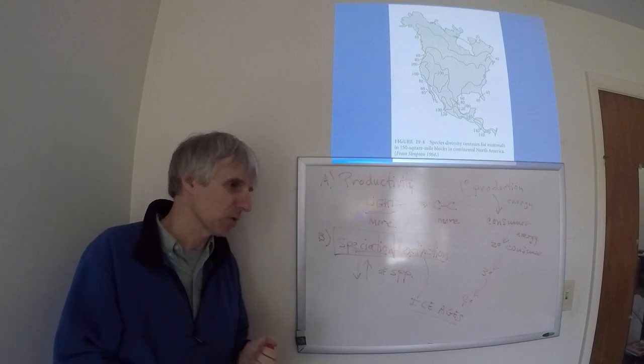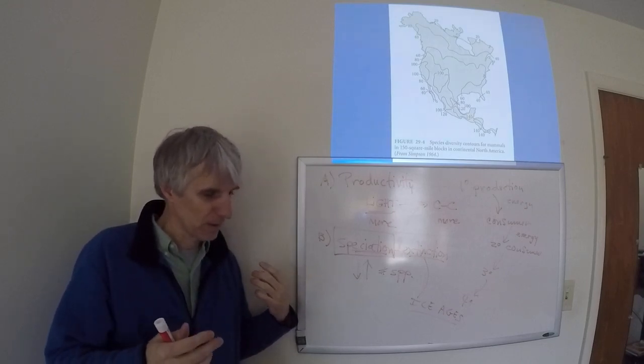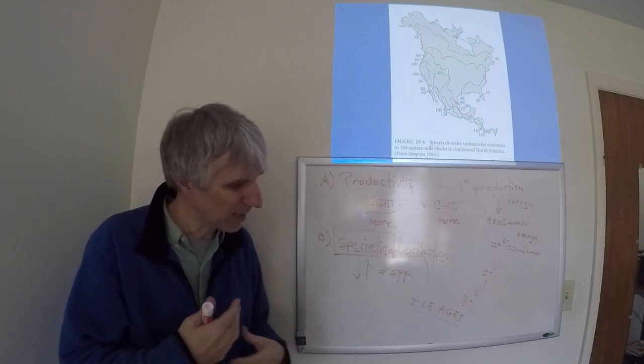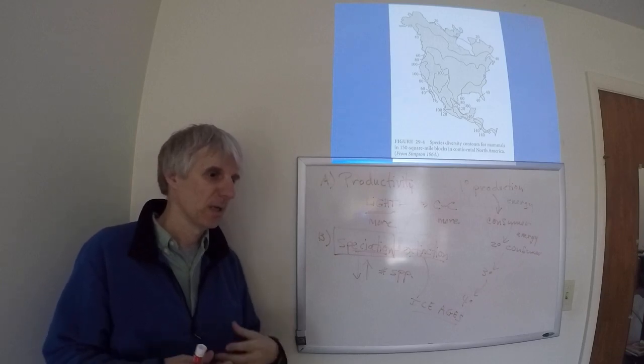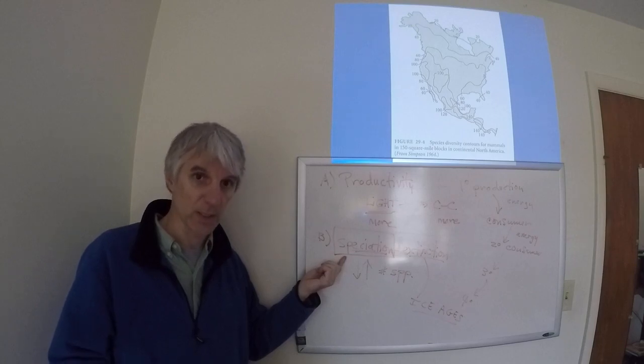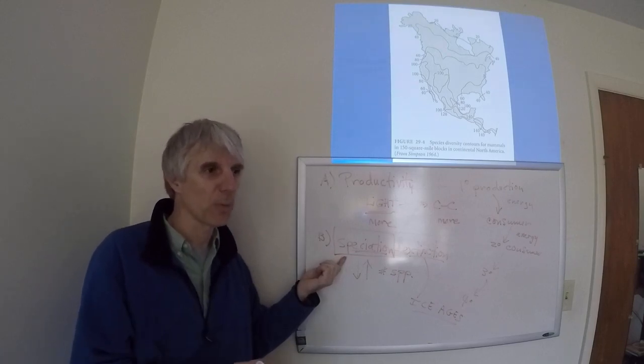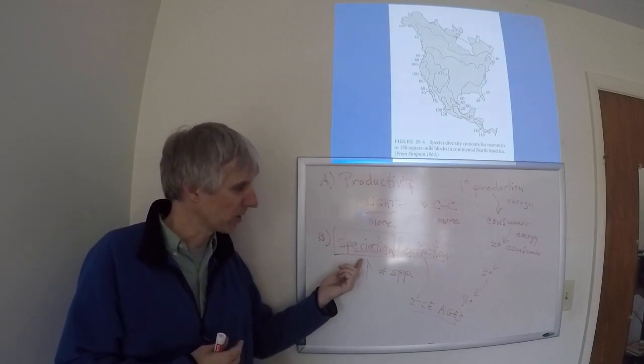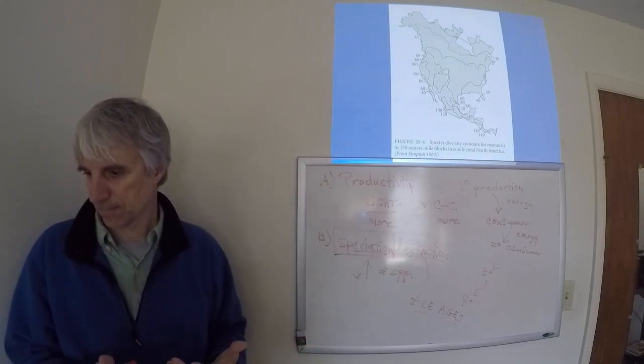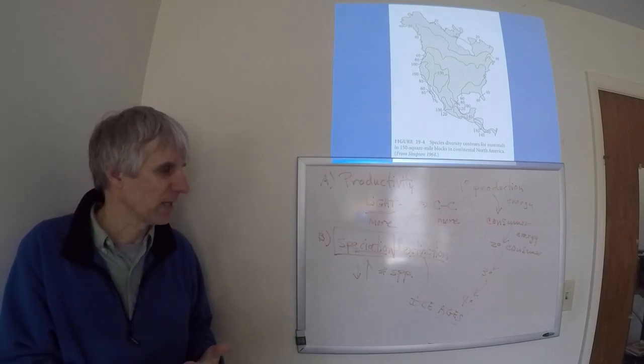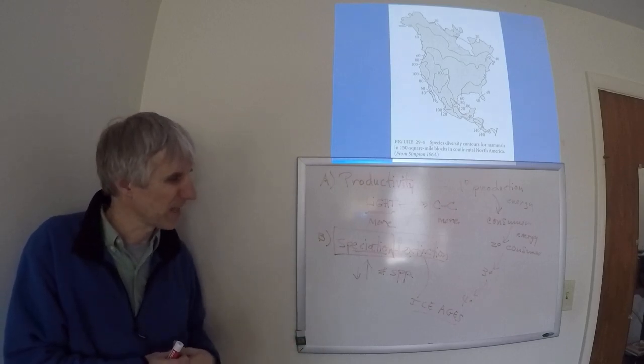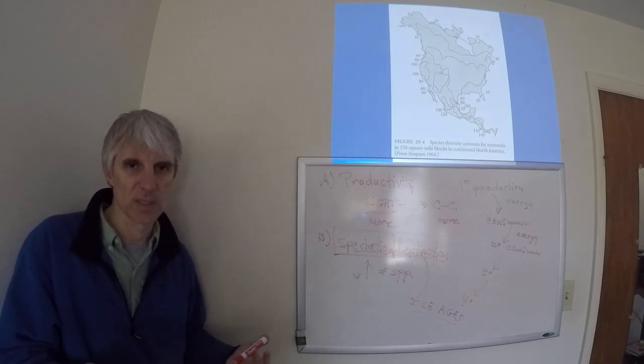That would also mean that because the tropics haven't had these periods like this of high extinctions, they've had a long time to accumulate species, whereas in our part of the world we accumulate them but we also erase them. So these extinction events have reduced the number of species in the temperate zones, whereas they haven't reduced the number of species in the tropics.